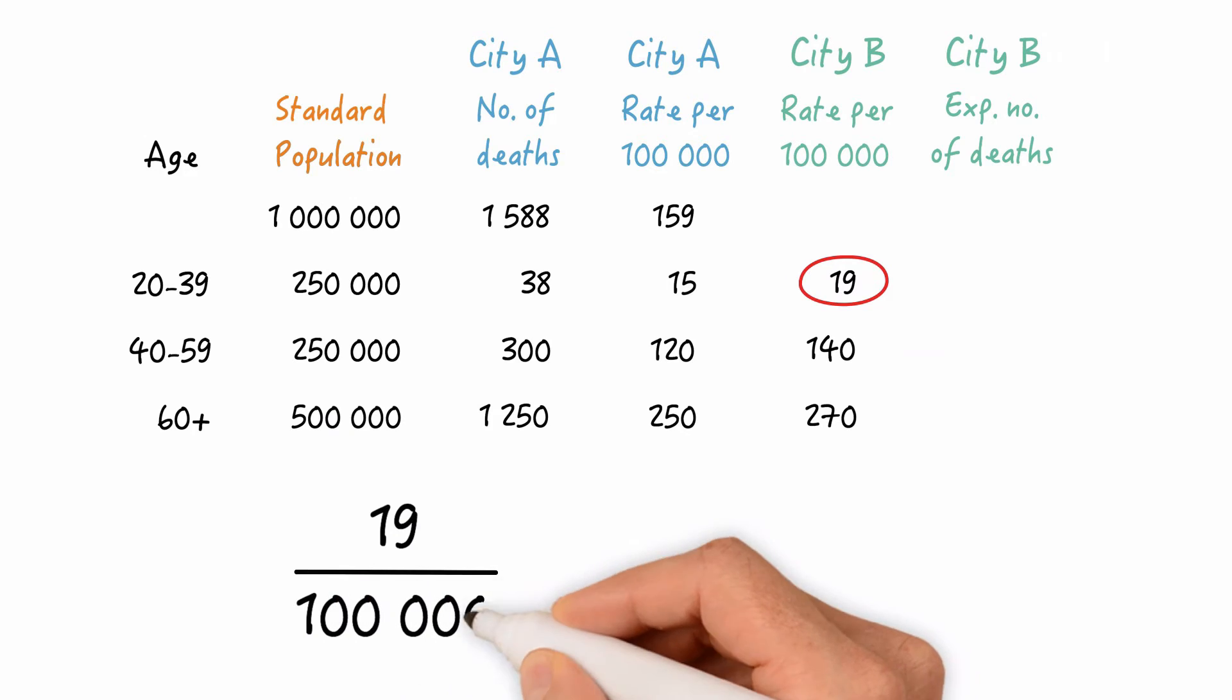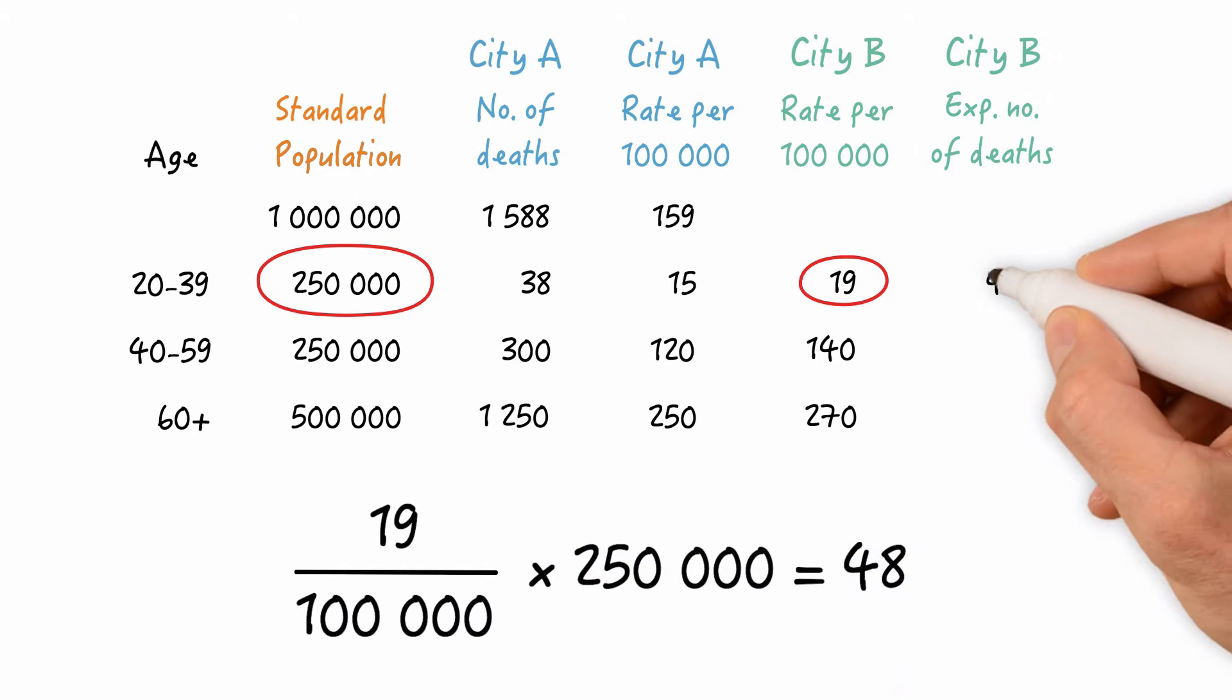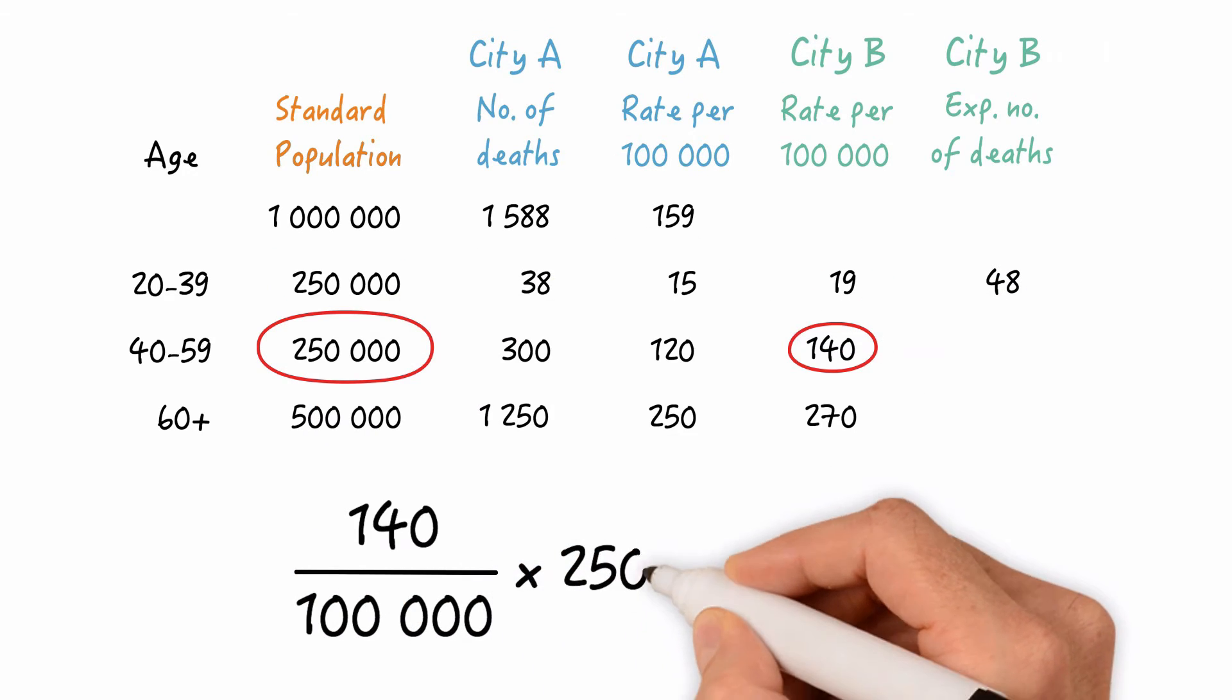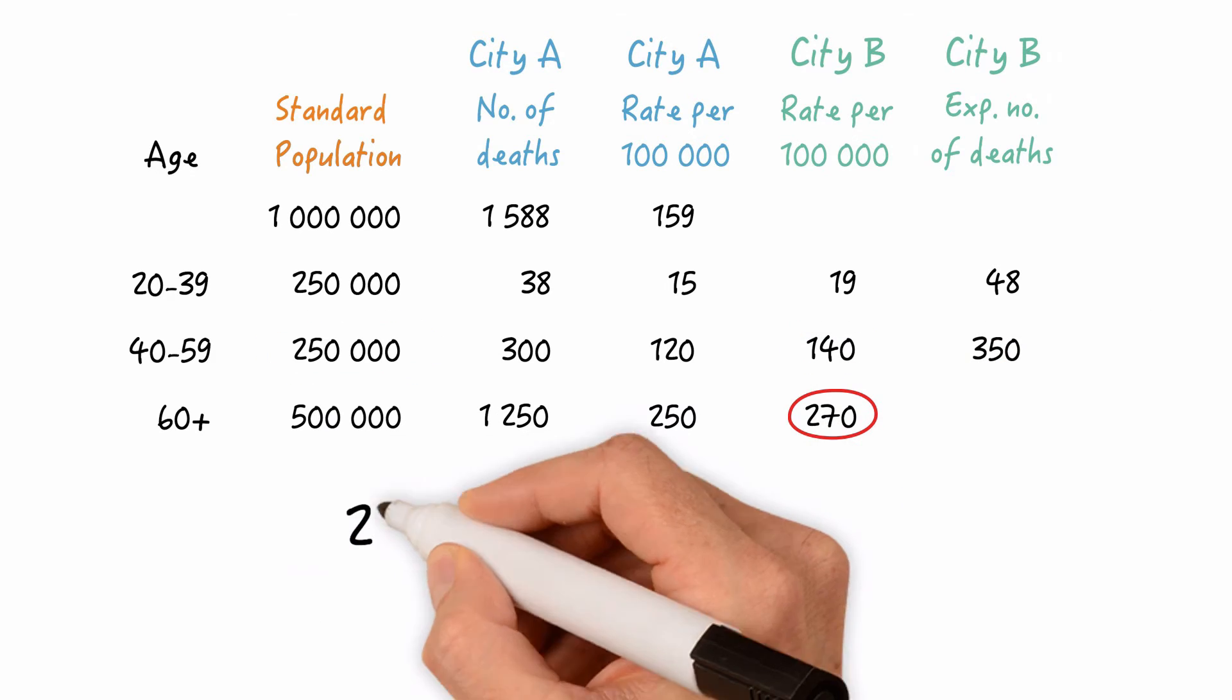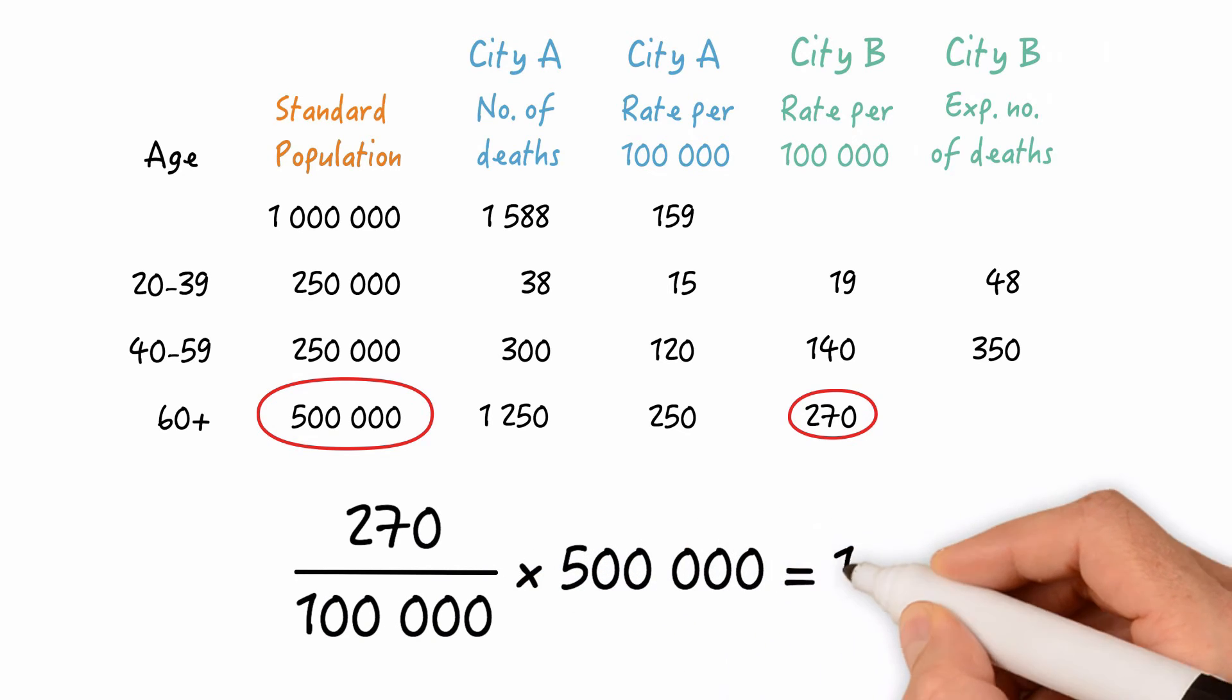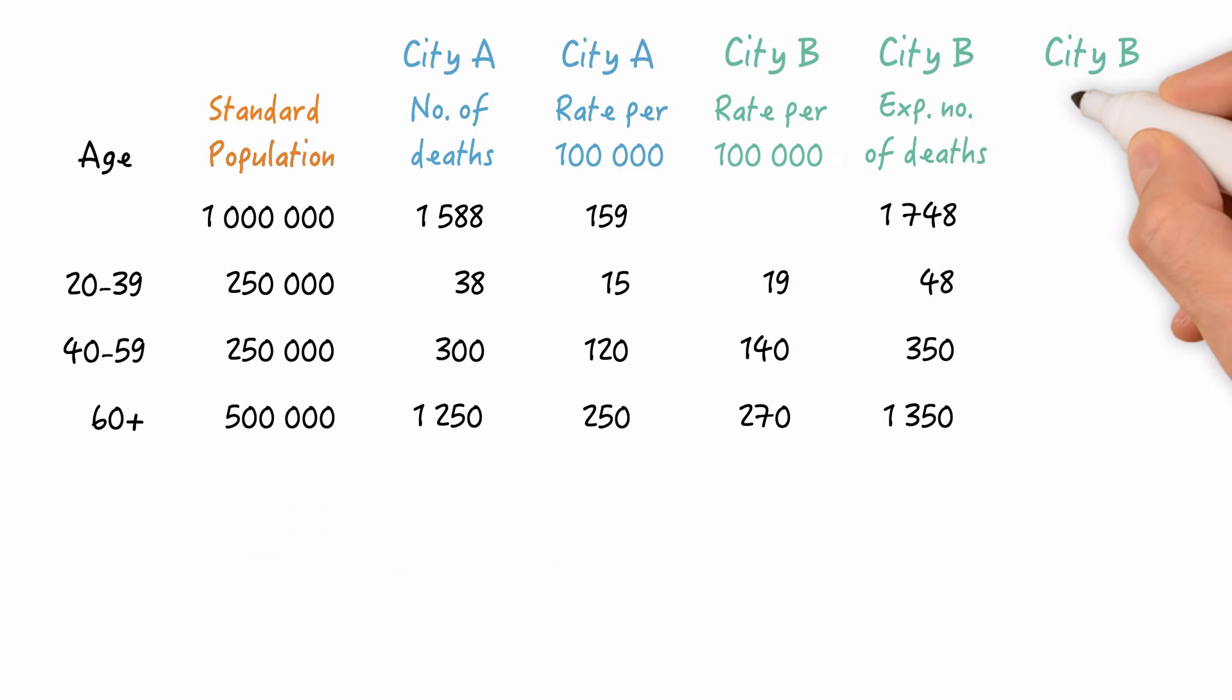So, 19 per 100,000 multiplied by 250,000 equals 48 expected deaths. 140 per 100,000 times 250,000 equals 350 expected deaths. And 270 per 100,000 times 500,000 equals 1,350 expected deaths. So overall, we'd expect 1,748 deaths if city B had the same age distribution as city A.